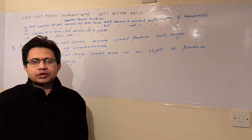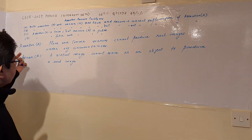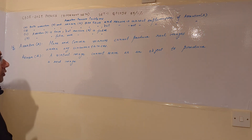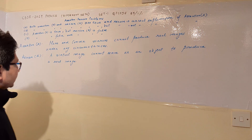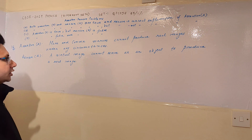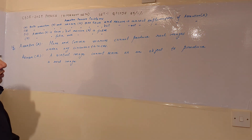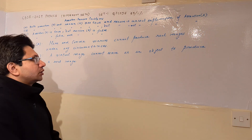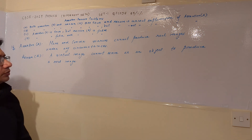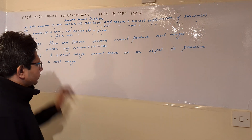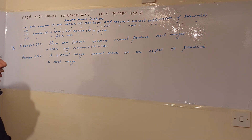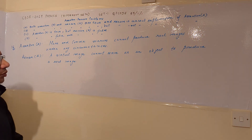The question is assertion: plane and convex mirrors cannot produce real images under any circumstances. The reason is: a virtual image cannot serve as an object to produce a real image. This problem is based on the concepts of mirrors, referring to plane and convex mirrors. We have to focus on the reason first — and this is a wrong statement.